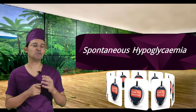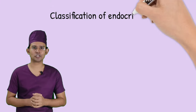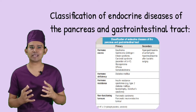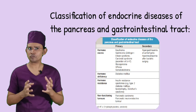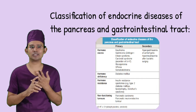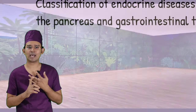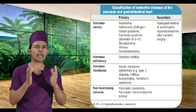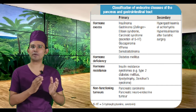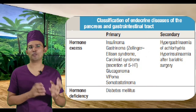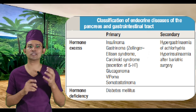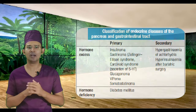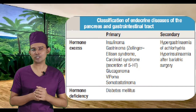Before further discussion, we need to understand classifications related to the pancreas and gastrointestinal tract. We classify these as hormone excess, hormone deficiency, hormone resistance, and non-functioning tumors. These categories are further divided into primary and secondary. Under primary hormone excess, we have insulinoma, gastrinoma, carcinoid syndrome, glucagonoma, and VIPoma.